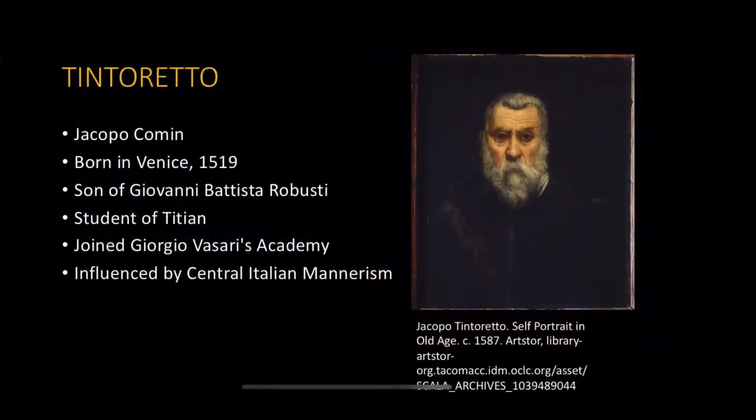My first artist of this period is an Italian painter named Tintoretto, whose full name from birth is Jacopo Comin, sometimes changed to Jacopo Robusti. Tintoretto is his adopted nickname, meaning 'the little dyer.' The image above is his self-portrait. He was born in Venice in 1519 and lived to the age of 75. His father, Giovanni Battista Robusti, was a cloth dyer in Venice. He has artworks influenced by central Italian Mannerism.